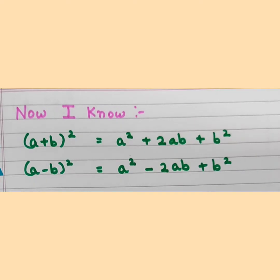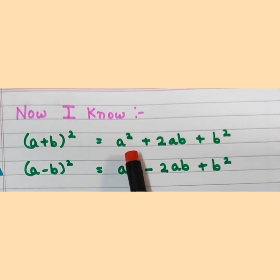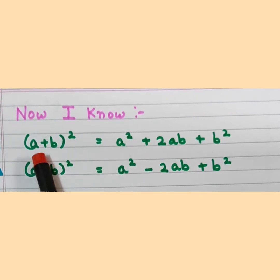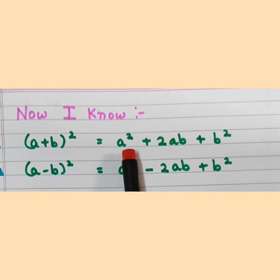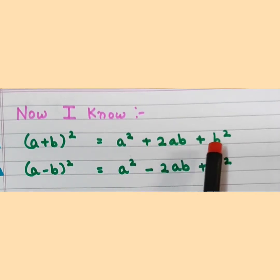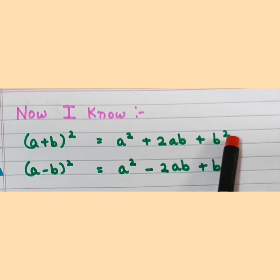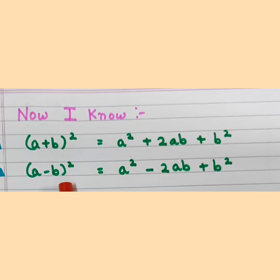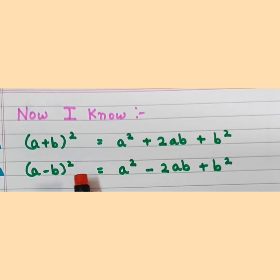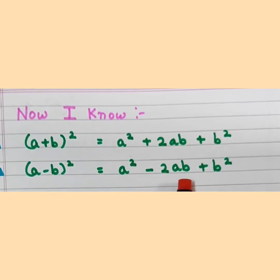Now we know the two algebraic formulas. The first is: A plus B the whole square is equal to A square plus 2AB plus B square. The second algebraic formula is: A minus B the whole square is equal to A square minus 2AB plus B square.